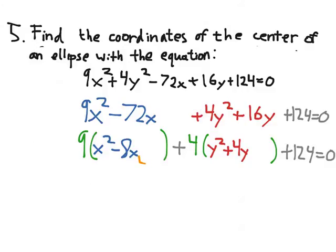Completing the square tells me I want to put a 16 there and a 4 here. But remember that these are being multiplied by numbers, like 9 and 4. So, if I want to add something, I have to subtract something out accordingly.